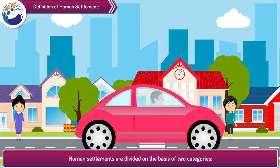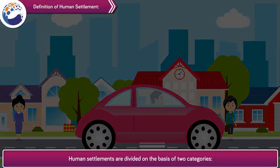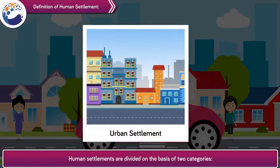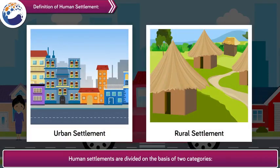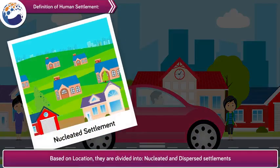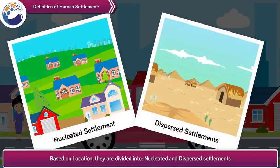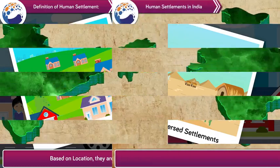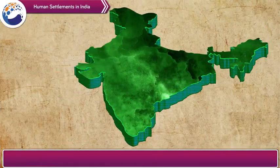Human settlements are divided on the basis of two categories: one, development, and two, location of human settlement. Based on development, they are divided into urban and rural settlements. Based on location, they are divided into nucleated and dispersed settlements.